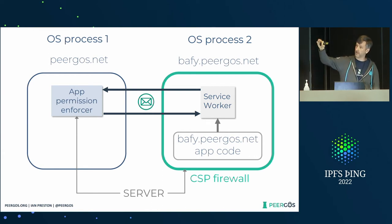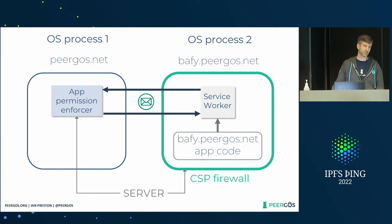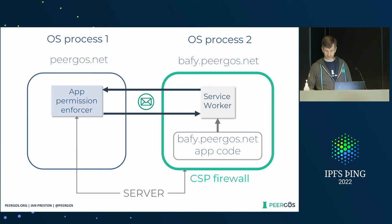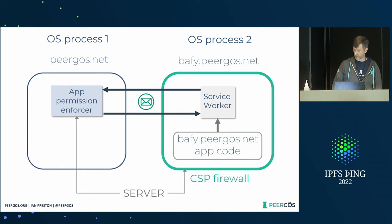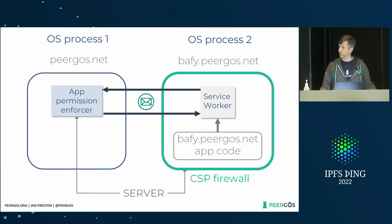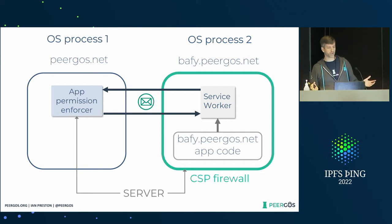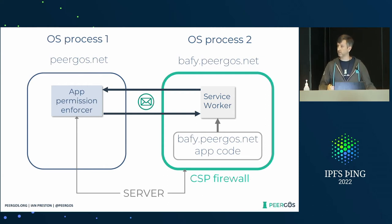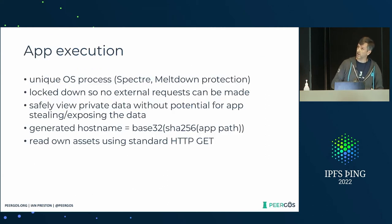In the Pygos context — the trusted context — that's where the app's permissions are enforced. Then that service worker loads your app on the same subdomain. As far as the app is concerned, it thinks it's just talking to a normal HTTP server — there's no encryption or anything it needs to know about.